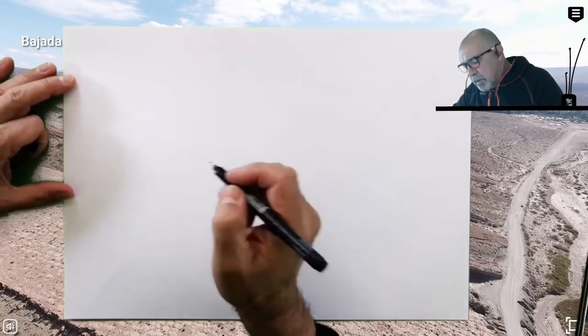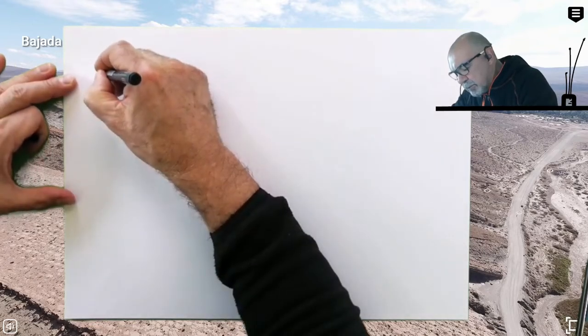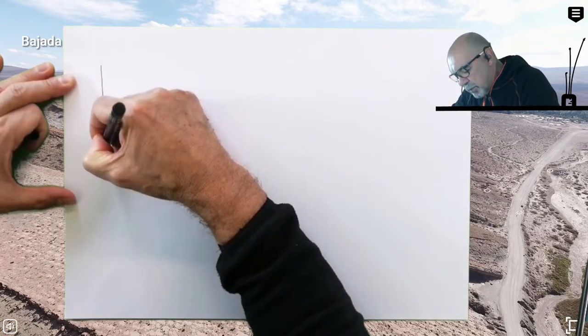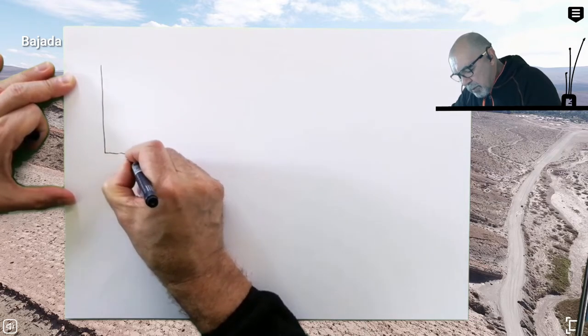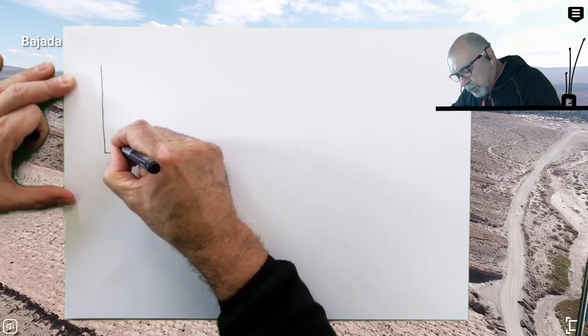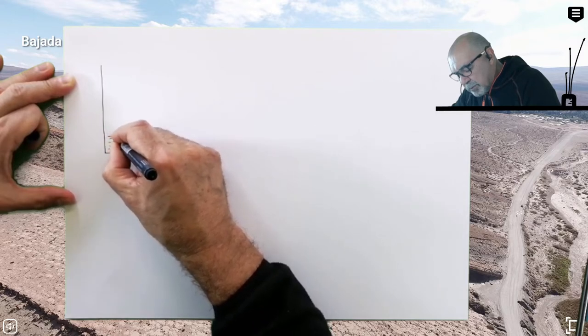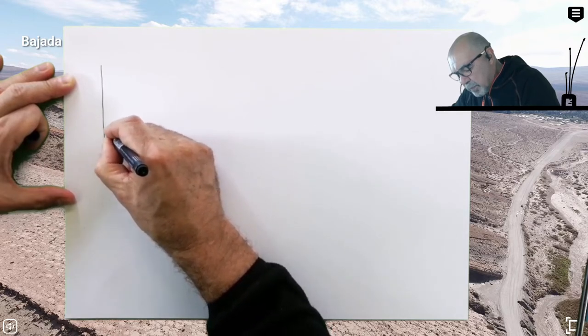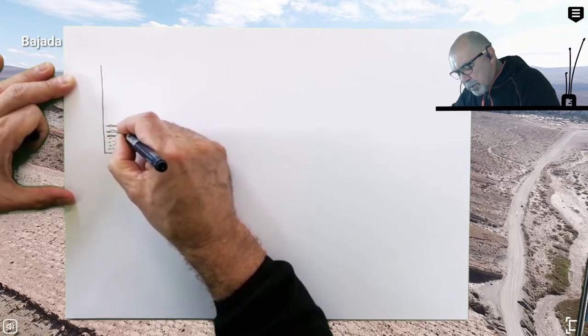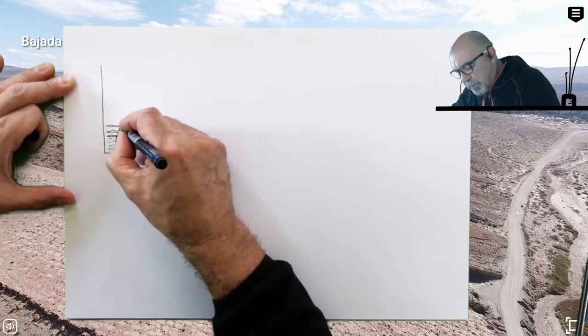This kind of coarsening upward succession is made of typically a section of fine-grained deposits with some wavy and lenticular bedding.